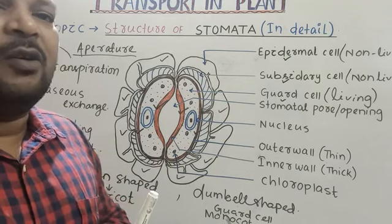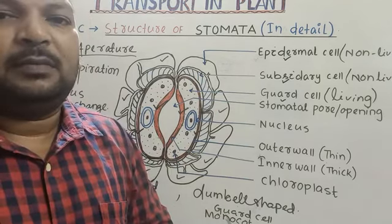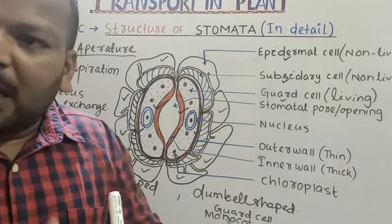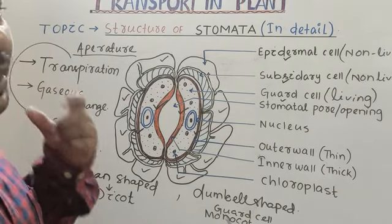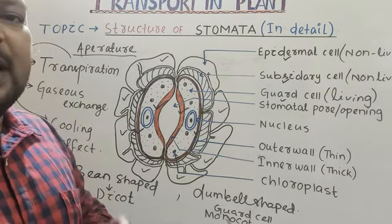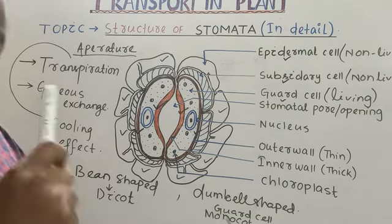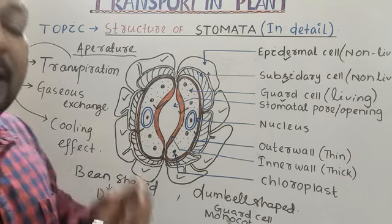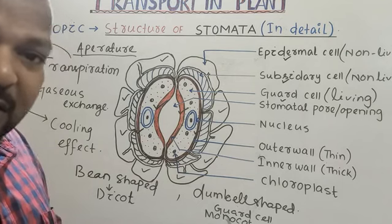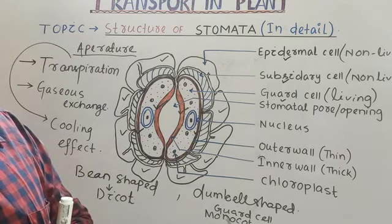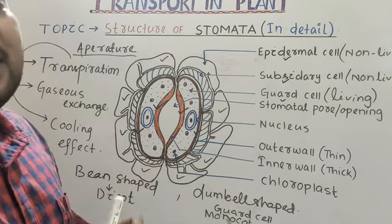Desert plants close their stomata during the daytime and open them during nighttime. But most plants generally open their stomata in daytime and close them at night. The opening and closing of stomata is controlled by the guard cell. Guard cell is bean-shaped or kidney-shaped in dicot and dumbbell-shaped in monocot. The inner wall of guard cell is thick and the outer wall is thin.